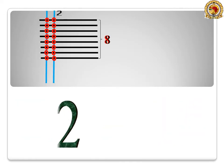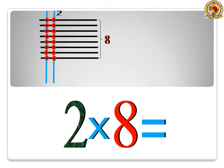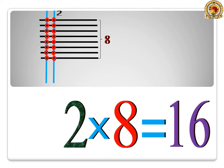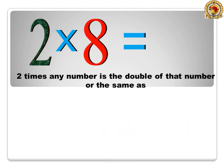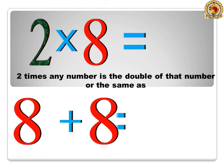2 times 8 is equal to 16. 2 times any number is the double of that number, or the same as 8 plus 8 is equal to 16.